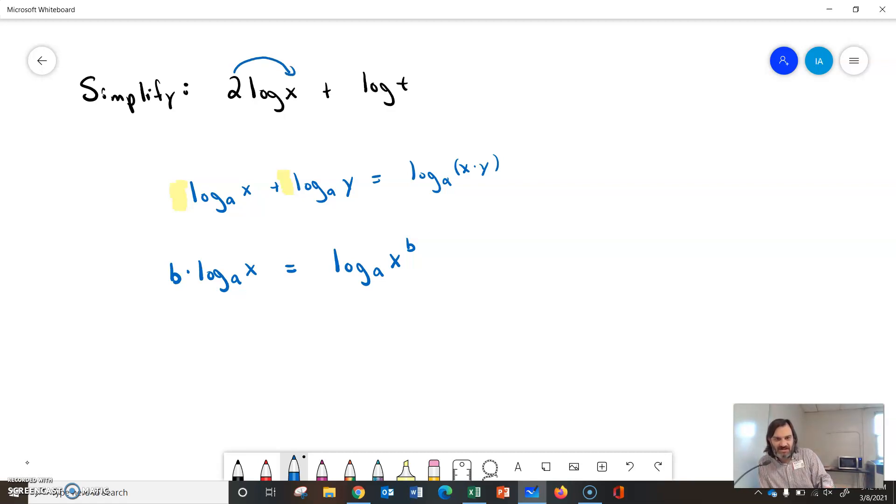So we'll do this in two steps. So we'll have log base 10, which is understood, of x squared plus log of base 10 t. So now it's ready for the property where we can go from addition of two logs to multiplication of their arguments.